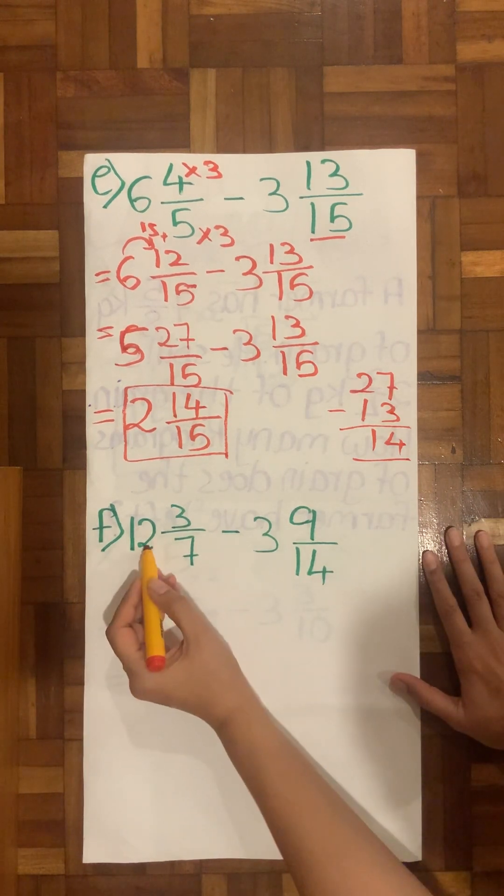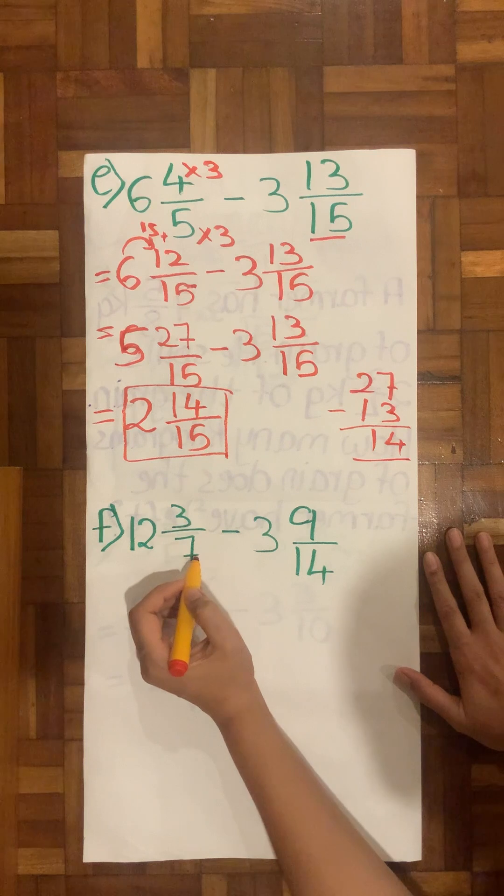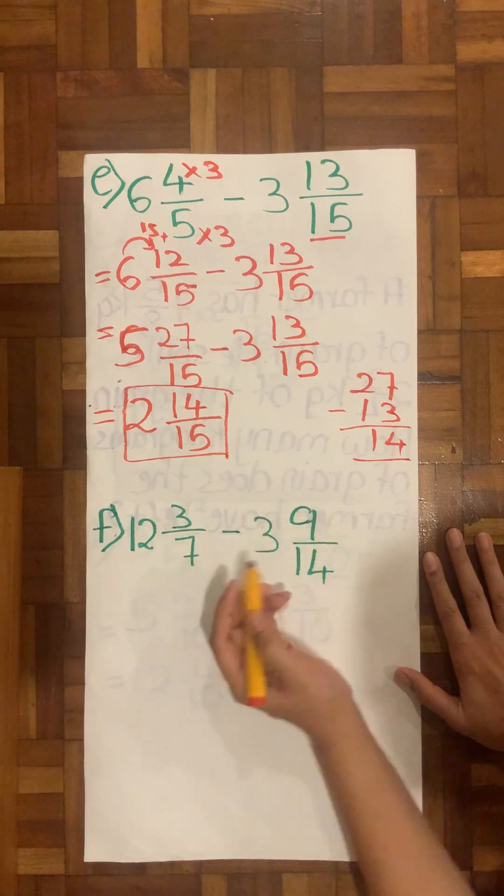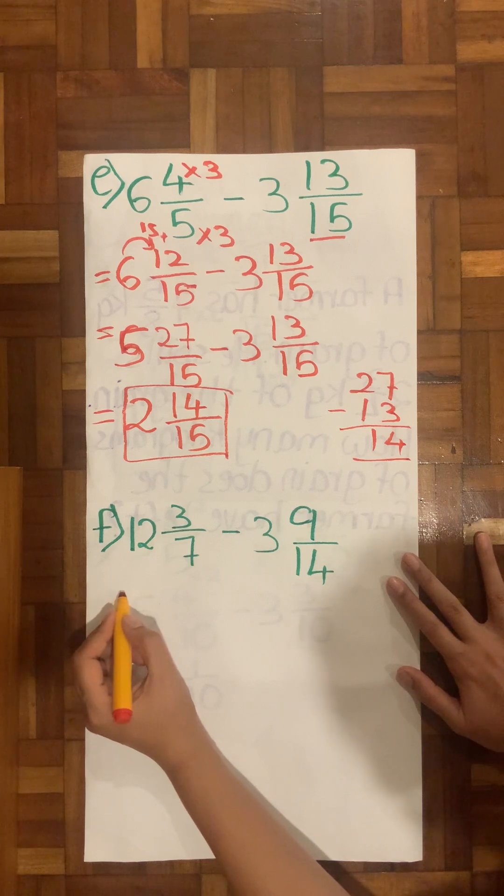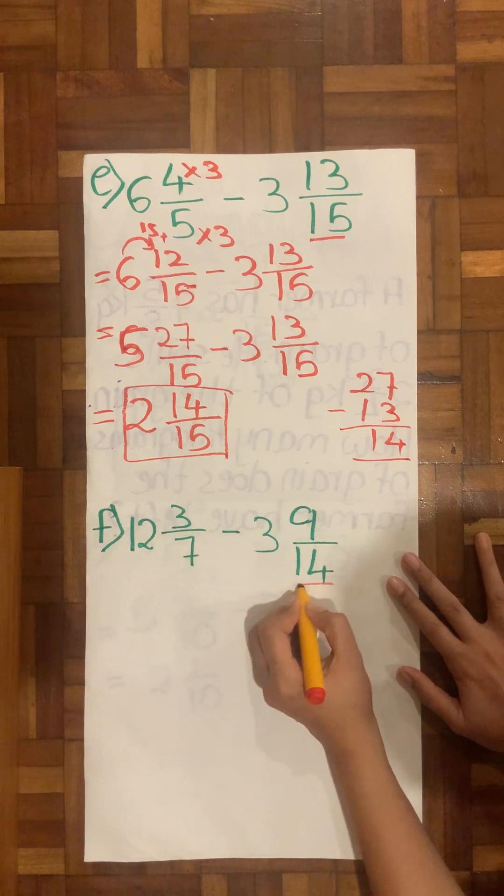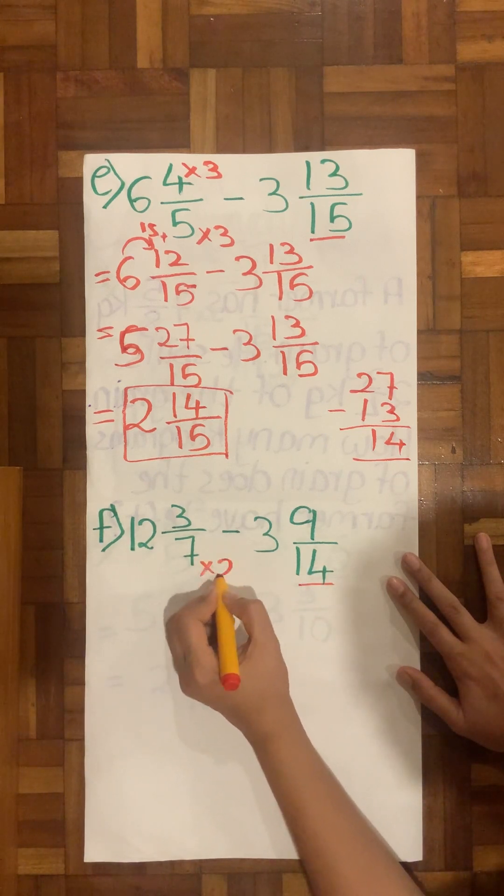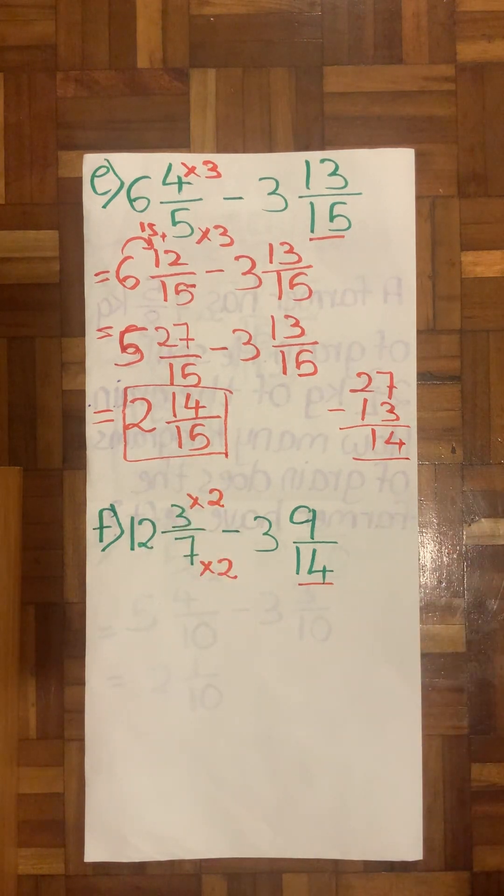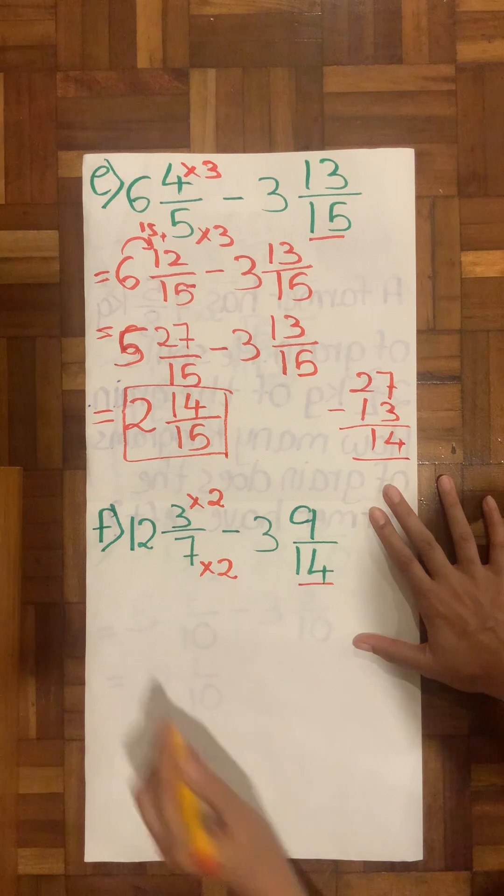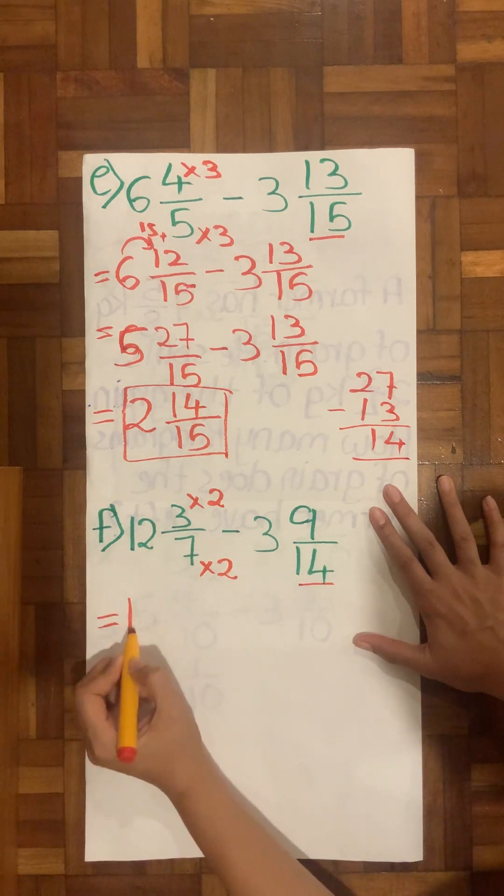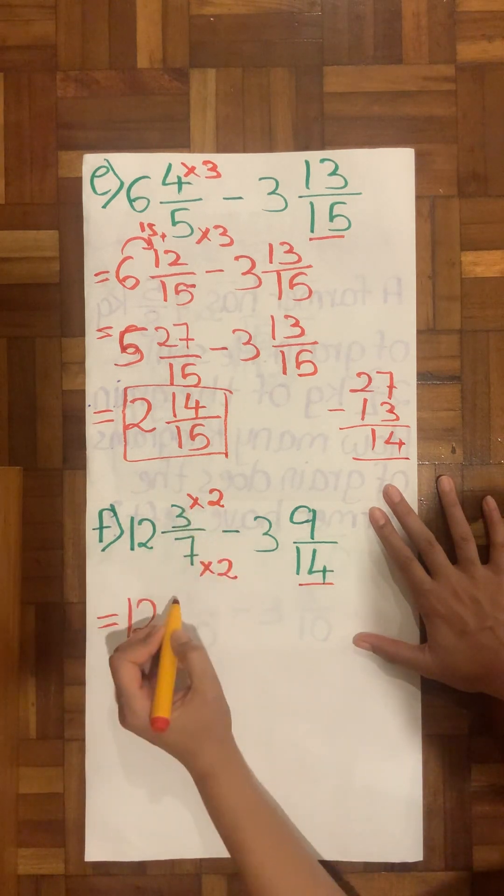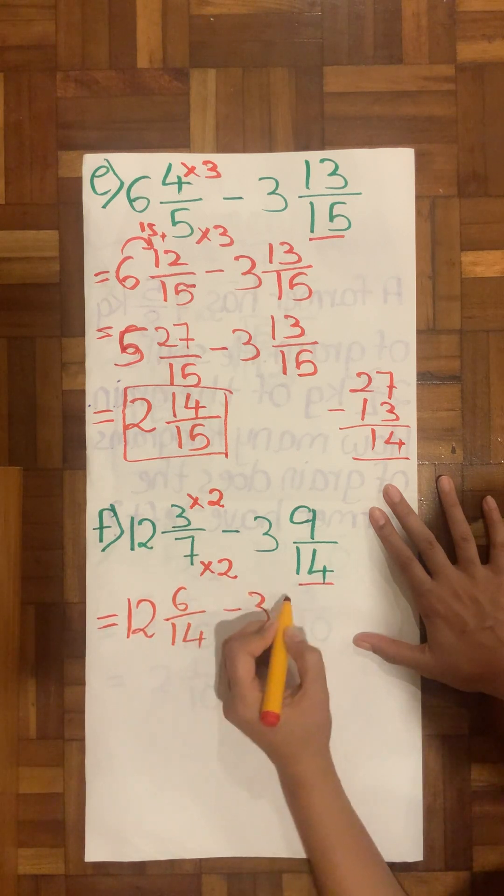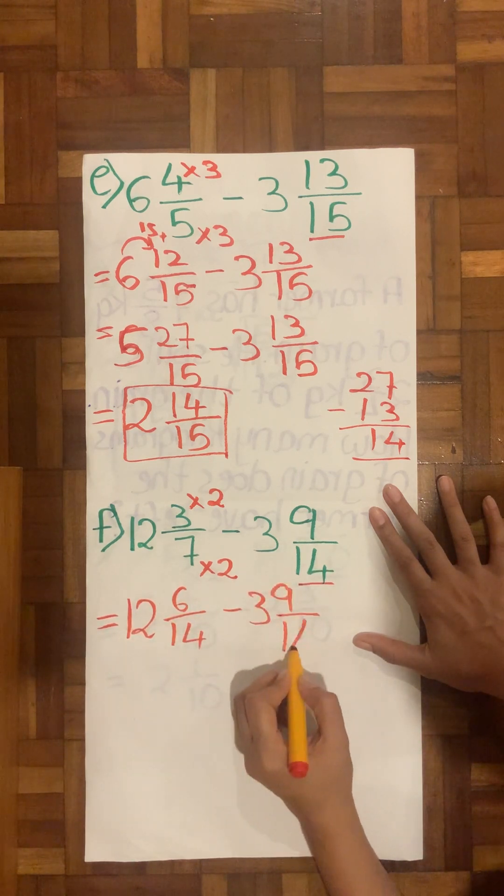Let's look into the last question. That is 12 wholes ³⁄₇ minus 3 times 2 is ⁹⁄₁₄. Therefore I will first deal with my denominator. So I know 7 times 2 is 14 and 3 times 2 is my 6.